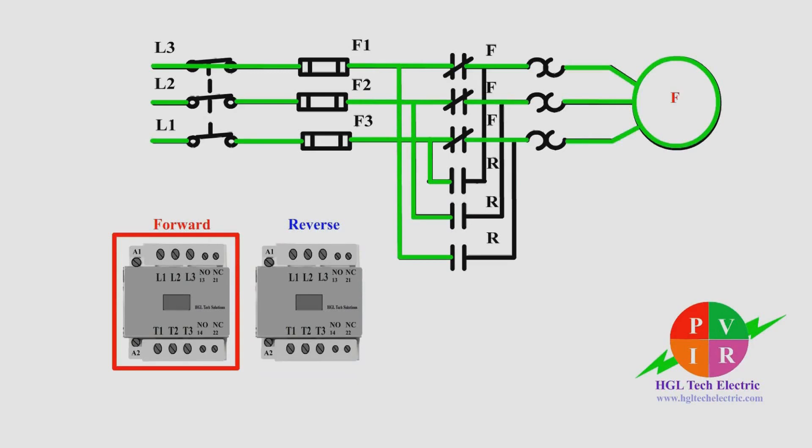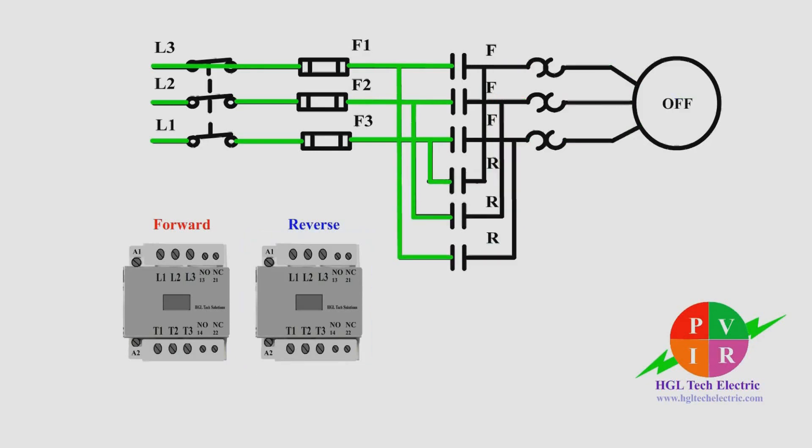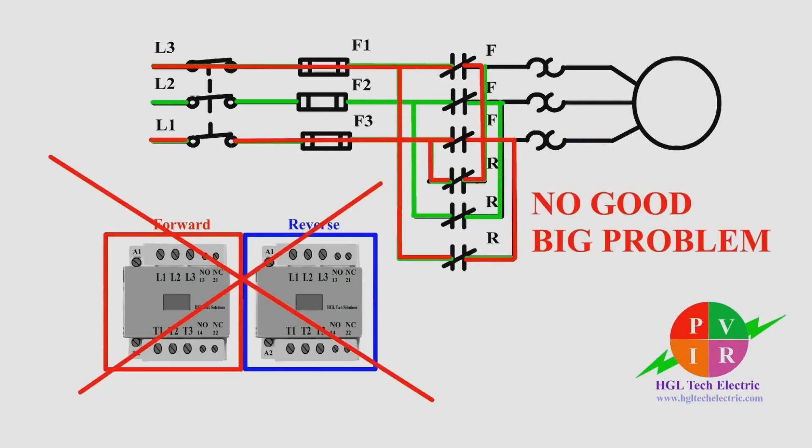We will use two separate contactors and an overload relay to selectively energize the three-phase motor. That seems simple, however if accidentally both contactors are energized at the same time, that would be a big problem. That should never happen because it would be shorting out two of the lines.